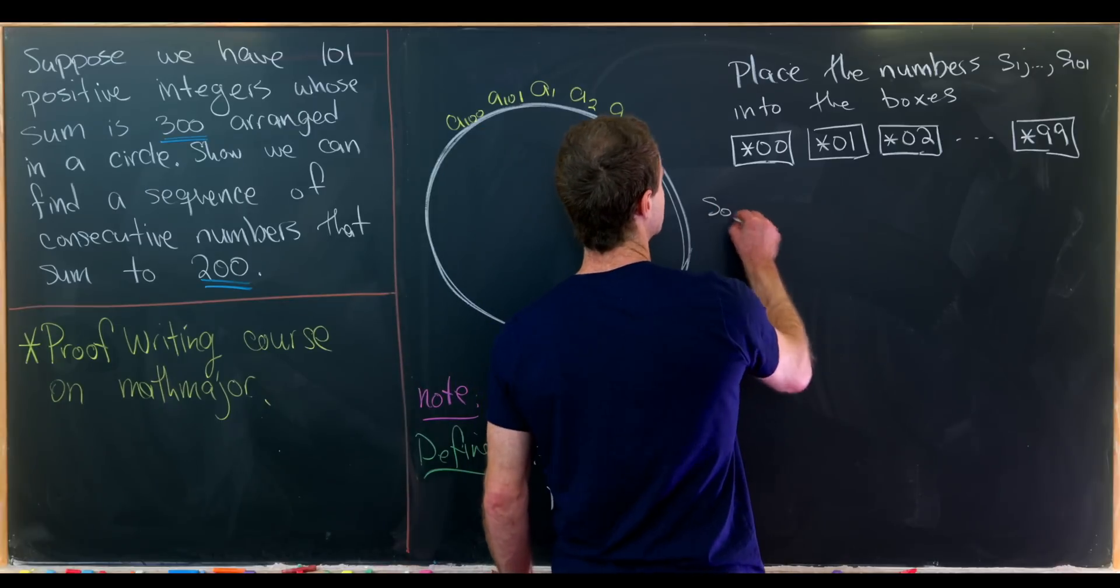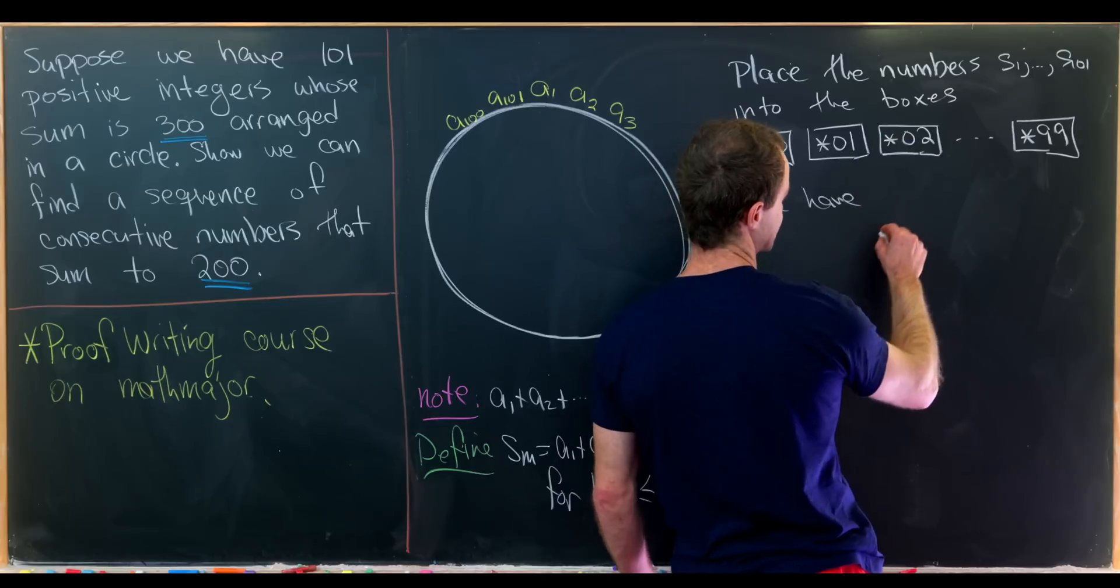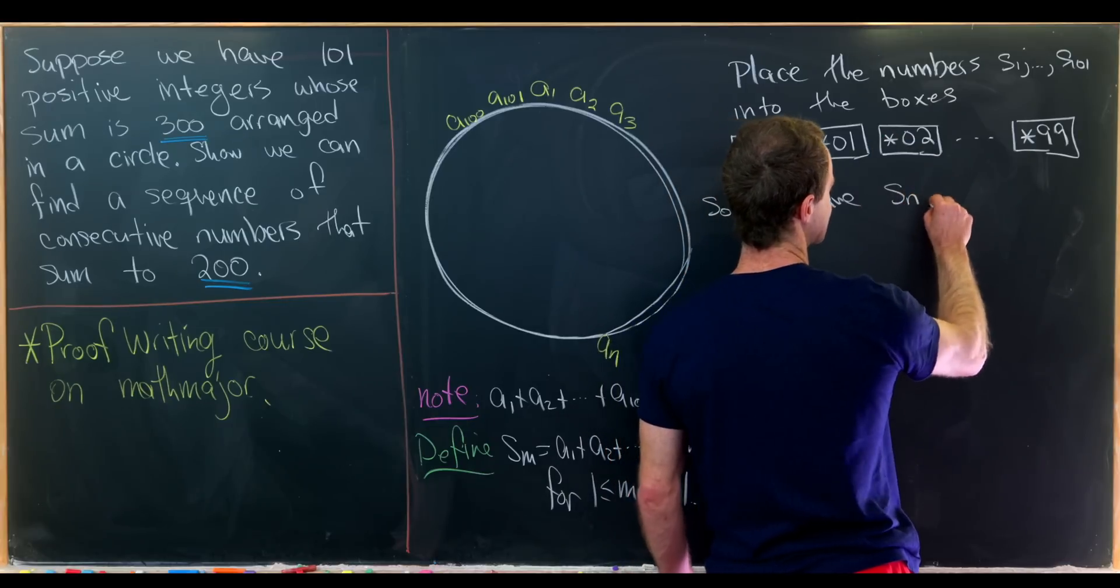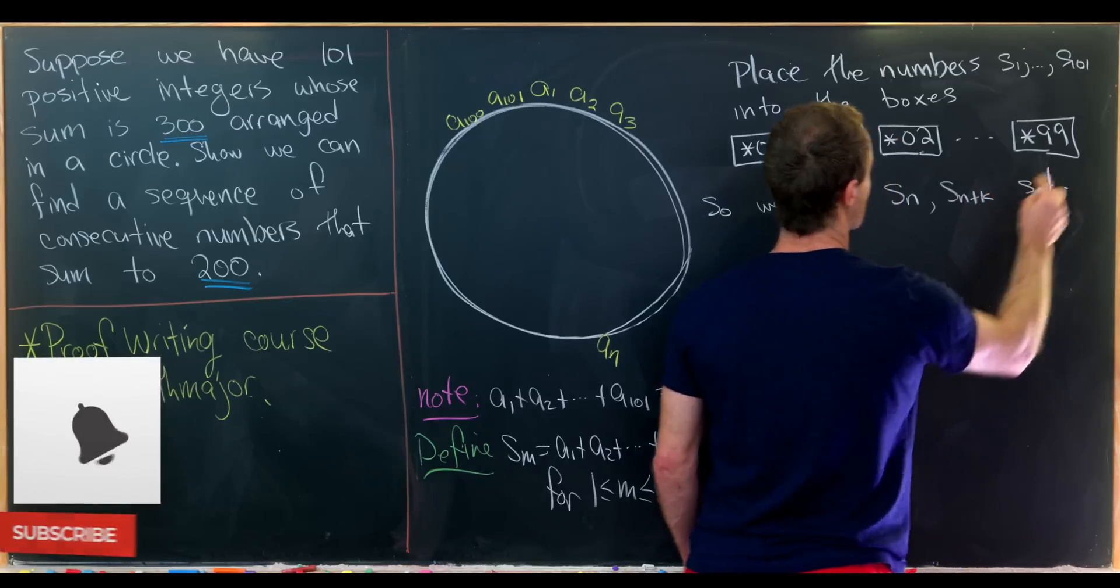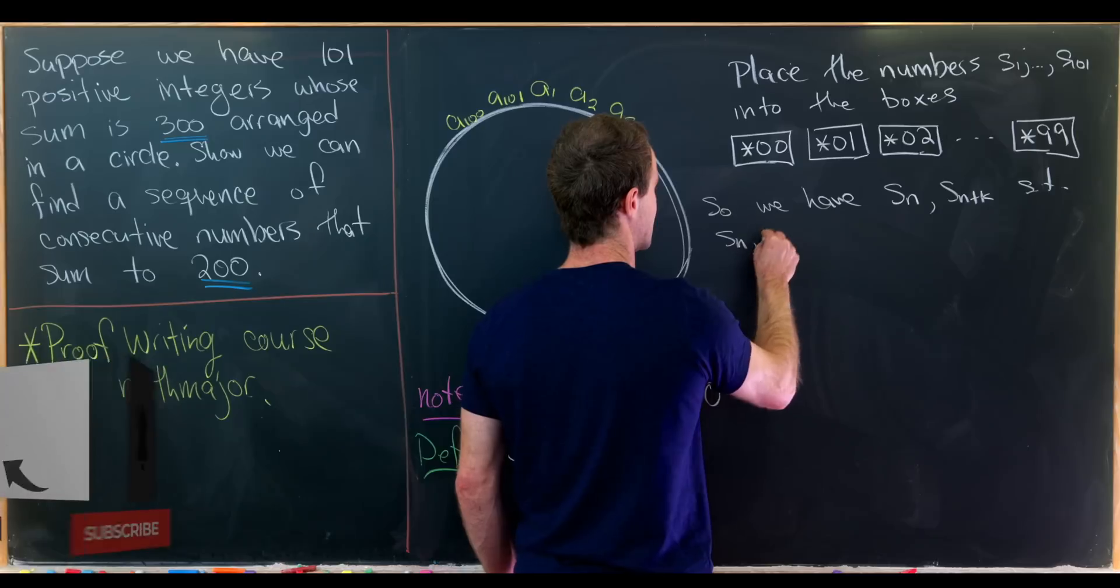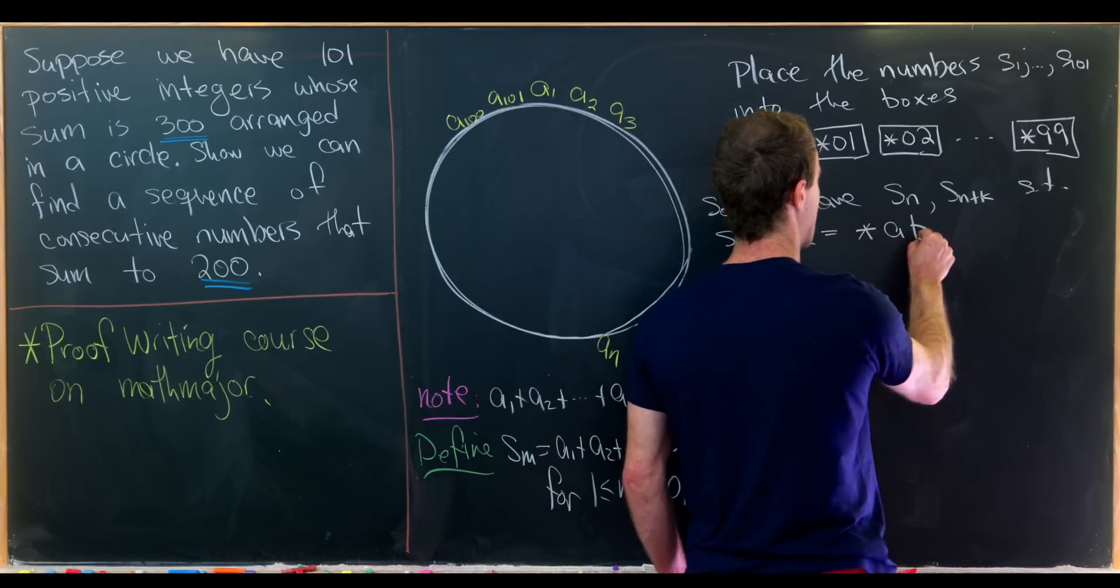Okay, so let's write down what we get out of this. So we have two terms from our sequence. I'll call those terms s sub n and then s sub n plus k such that s sub n and s sub n plus k are both of the form star a